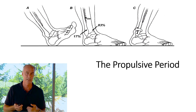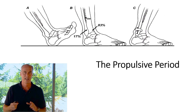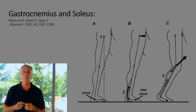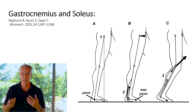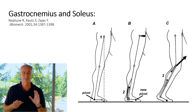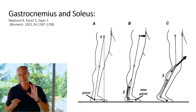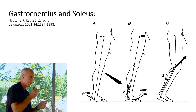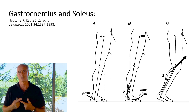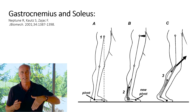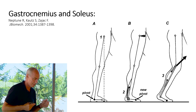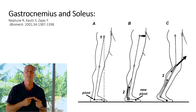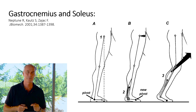Flexor hallucis longus plays the most important role in protecting the ankle. Neptune et al. wanted to figure out what the soleus and gastrocnemius do during the propulsive period. Soleus decelerates forward motion of the tibia. But gastrocnemius, as a two-joint muscle, when the ankle plantar flexes rapidly it causes the knee to flex, driving the knee up and forward. Neptune showed that gastrocnemius is the body's most powerful hip flexor during the initiation of push-off — counterintuitive since it's in the foot — but with the leg extended far behind you, driving the knee up gives all hip flexors longer lever arms to function more efficiently.